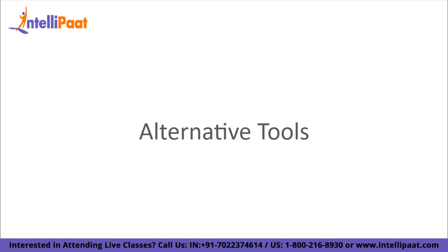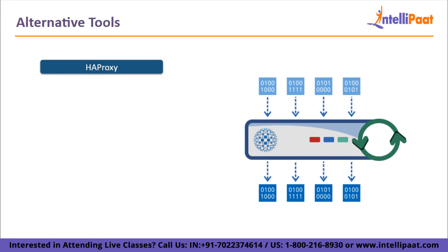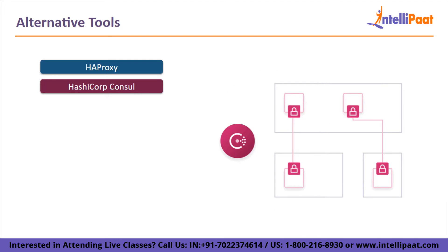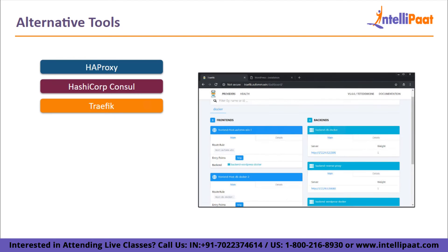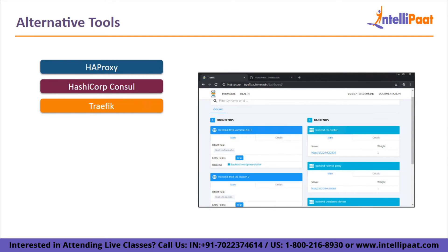Now let's take a look at some of the alternative tools. First, we have HAProxy. HAProxy is a recognized load balancer and software application delivery controller that, in conjunction with enterprise-class features, services, and first-rate support, enables businesses to fully benefit from these technologies. Then we have HashiCorp Consul. Through a DNS or HTTP interface, Consul makes it simple for services to register themselves and find one another. Then we have Traefik, which is a cutting-edge HTTP reverse proxy and load balancer designed for quick microservice deployment. It supports a variety of backends to maintain its configuration automatically and dynamically.